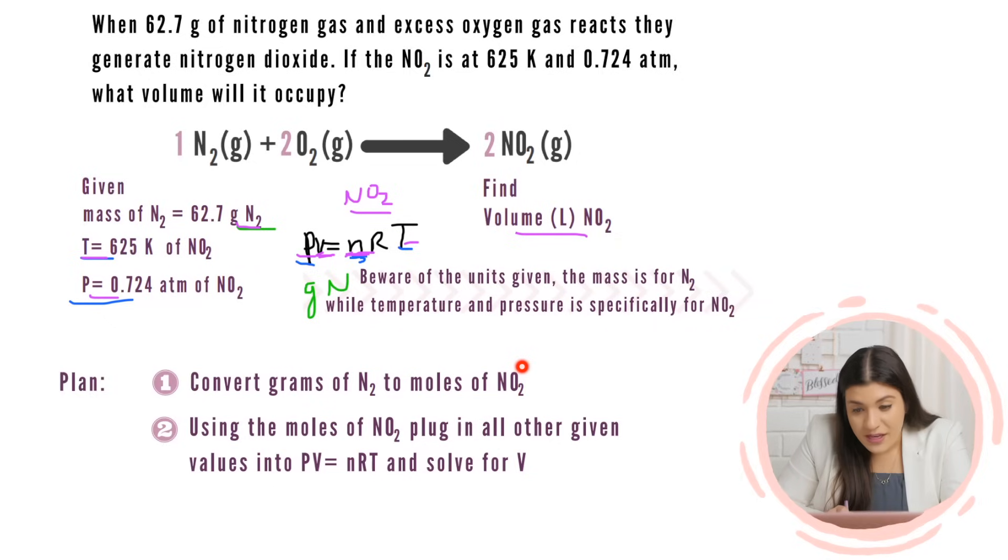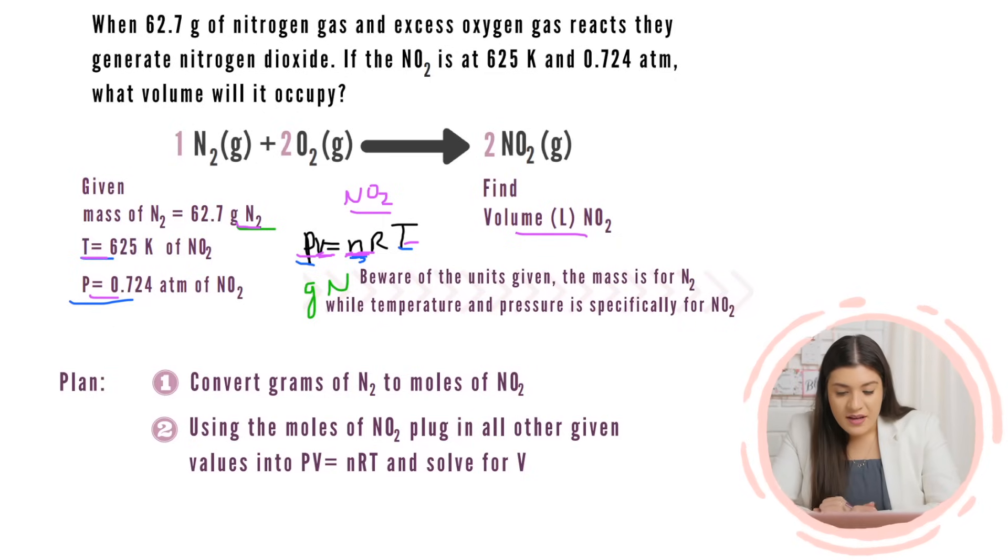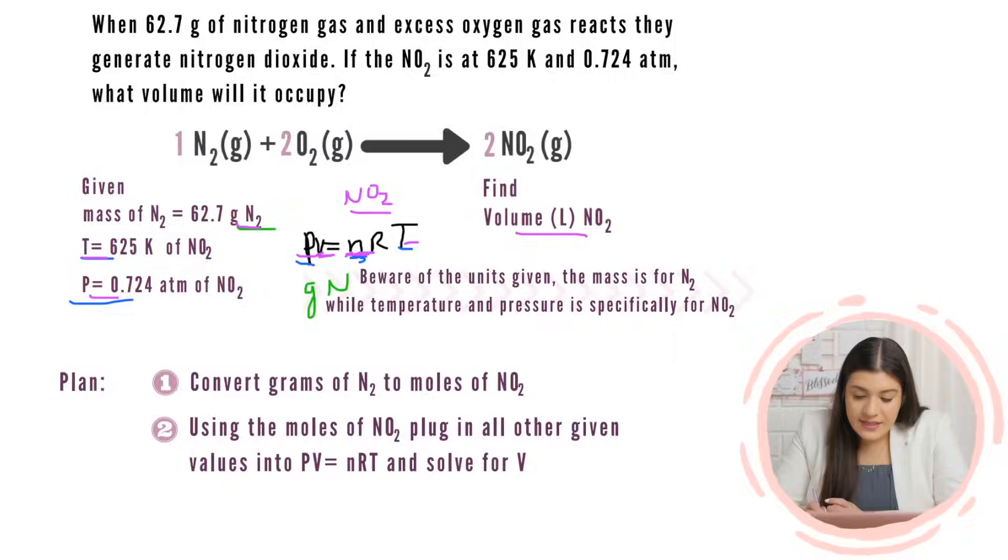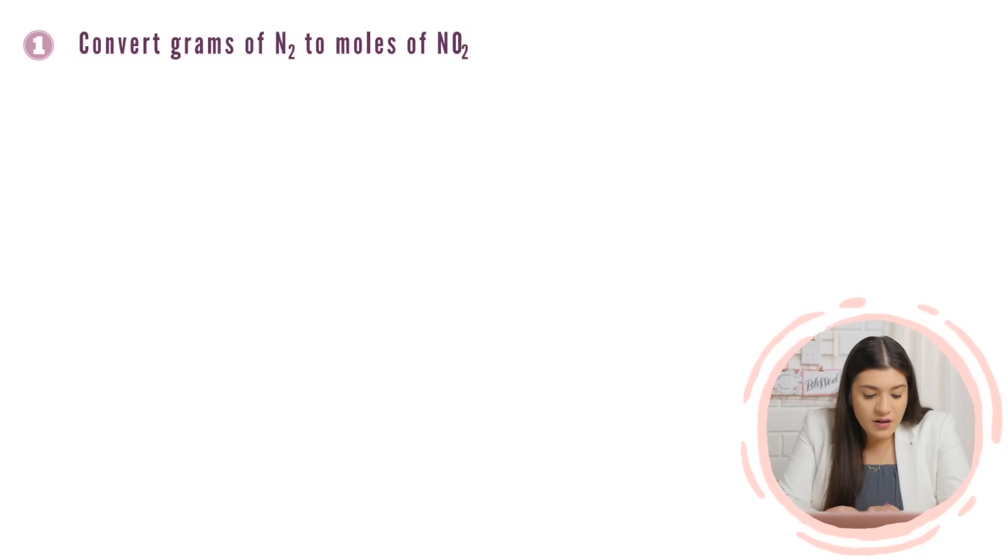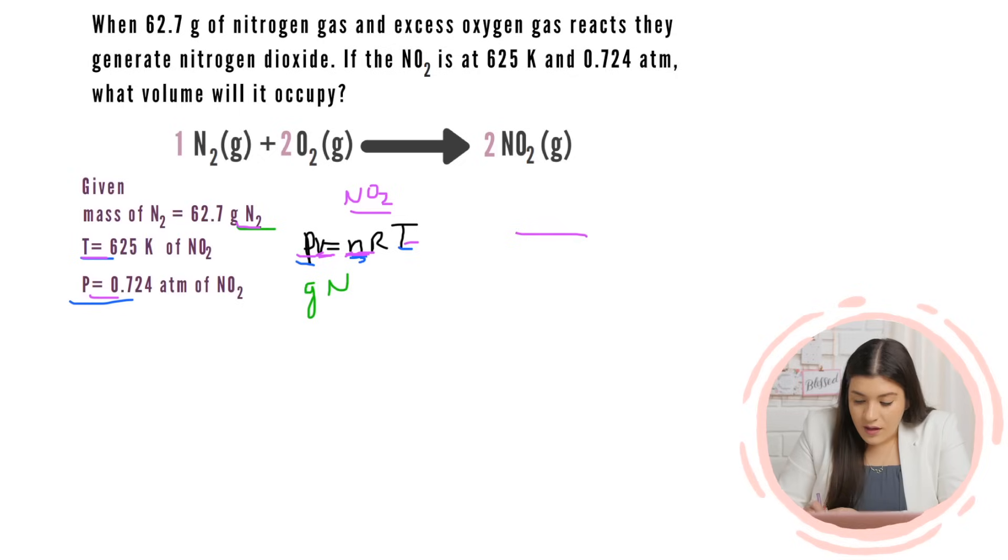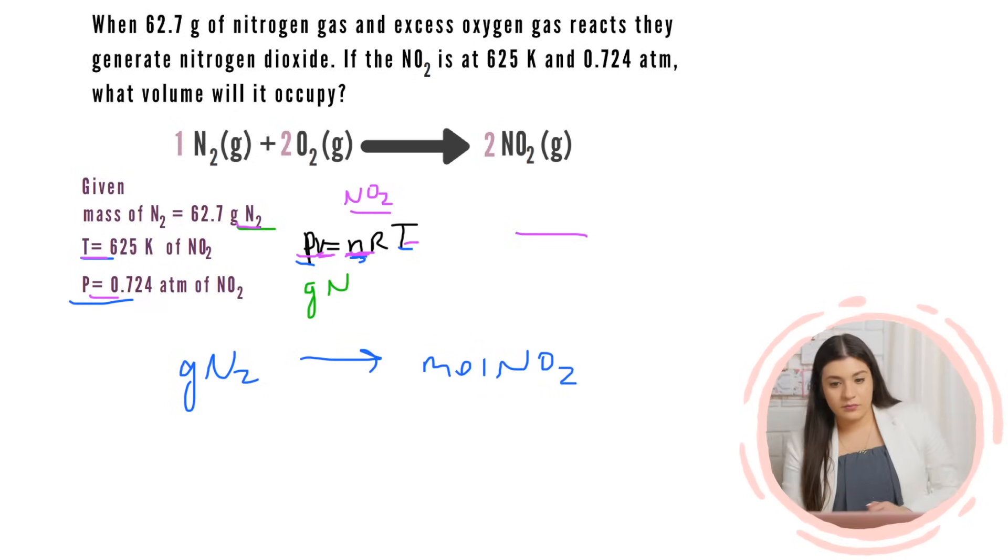The ideal gas law here, we want all of these, every single one of these to represent NO2 because we have the pressure, the temperature, and we now want the volume. We don't have that for N2. Like we don't know what the moles of NO2 is to plug it into the formula to then give us the volume. So that's what we have to do first. The first step is to convert those grams of N2 to moles of NO2. Do we see that? Then from there, once we get those moles, then we can plug it into the formula because we'll have our pressure, our moles, we know our gas constant, and we know our temperature, and then we can just solve for V.